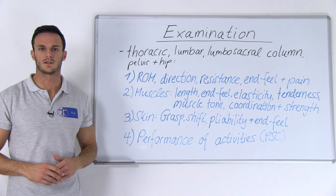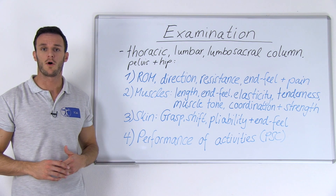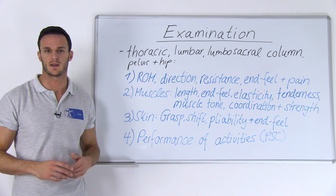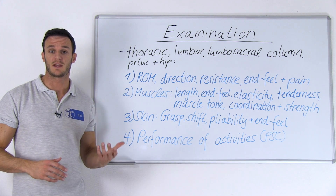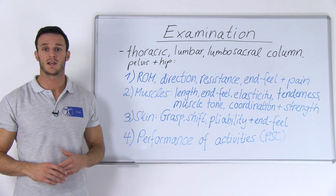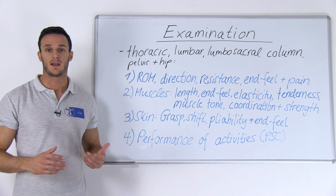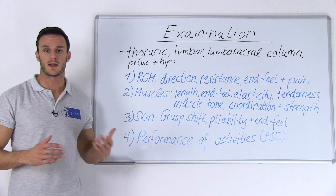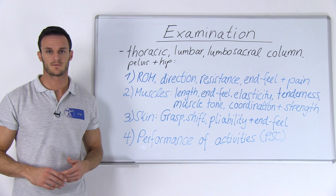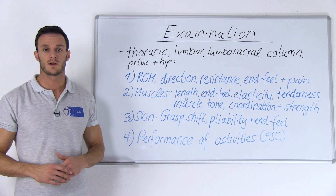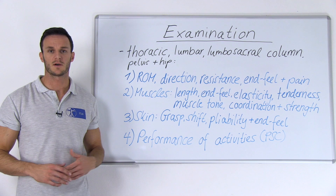Like in other pathologies, your goal during examination should be to test the hypotheses that you have formed during your patient history taking. According to the guideline, you start with the examination of the thoracic, lumbar, and lumbosacral column including the pelvis and the hip. You want to assess range of motion, direction of motion, resistance to movement and endfeel. Secondly, you would like to assess the consistency and provocation of pain and possible radiation.